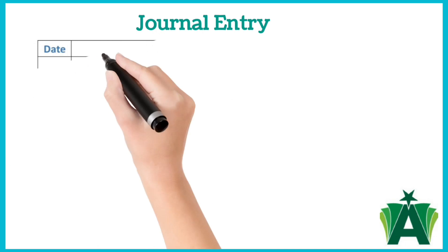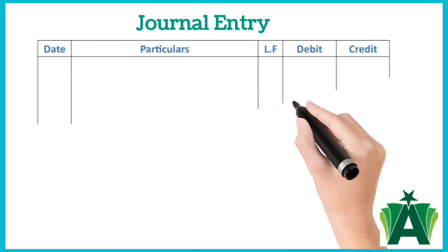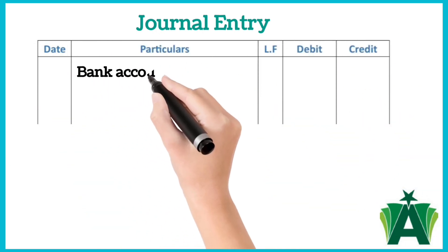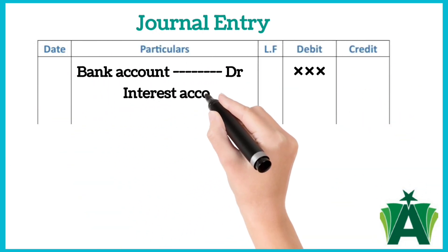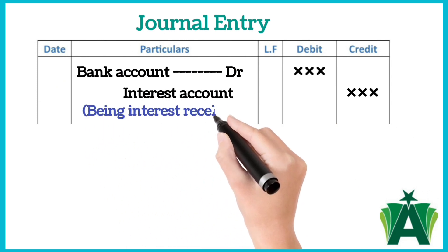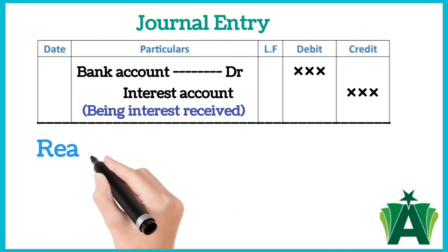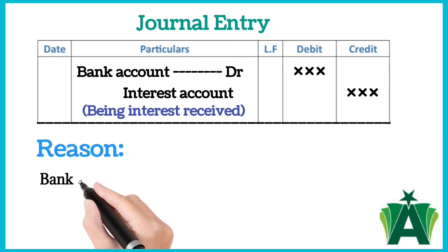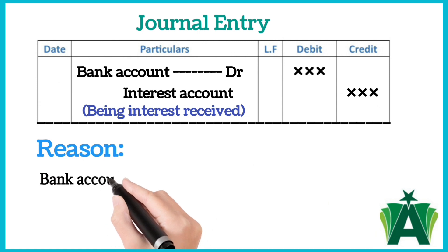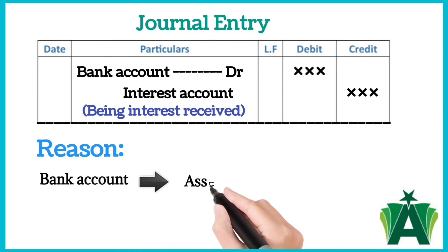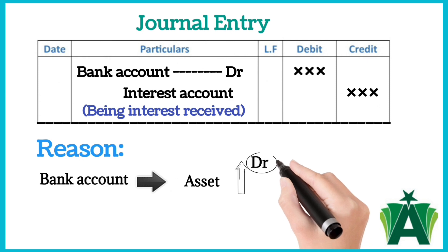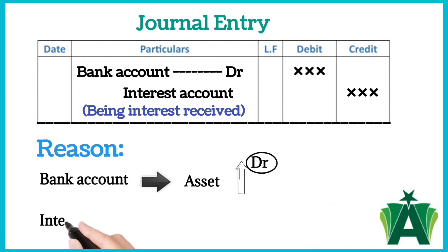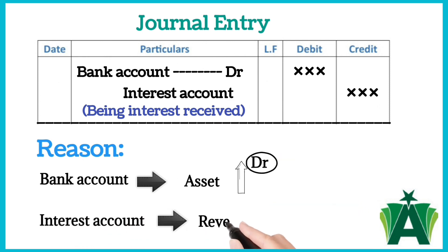The journal entry for interest allowed by a bank is: bank account debit, interest account credit, being interest received. Reason: interest received from the bank increases the bank balance, which is an asset. Assets are debited when they increase. Interest received from the bank is revenue, which is credited when it increases.